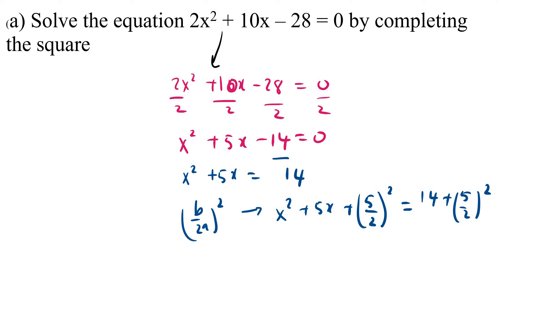So 5 over 2 square equals to 14 plus 5 over 2 square. You're going to have x² + 5x + (5/2)² equals to 14 + 25/4. This is a perfect square already. So it is (x + 5/2)² equals to common denominator, you have 56 + 25.